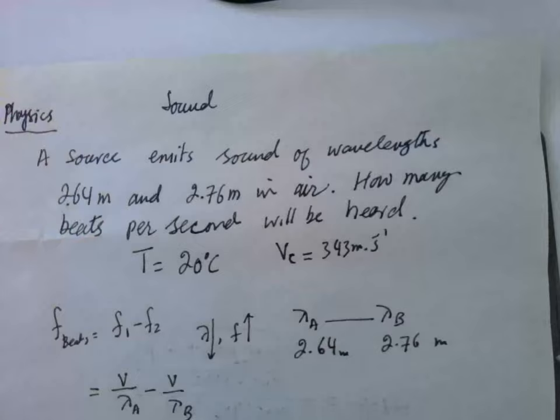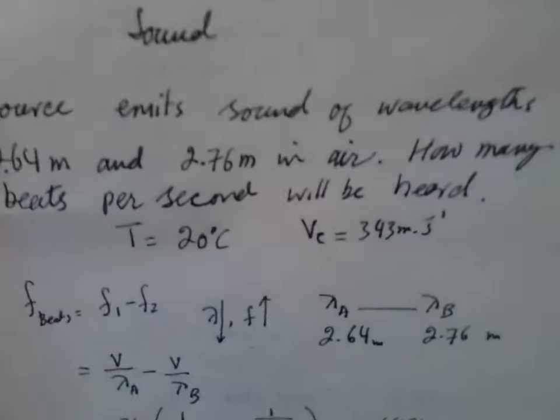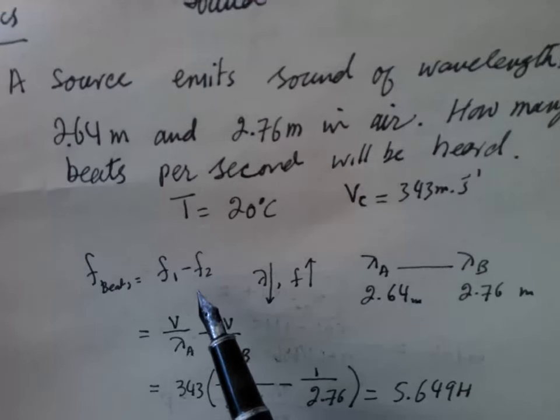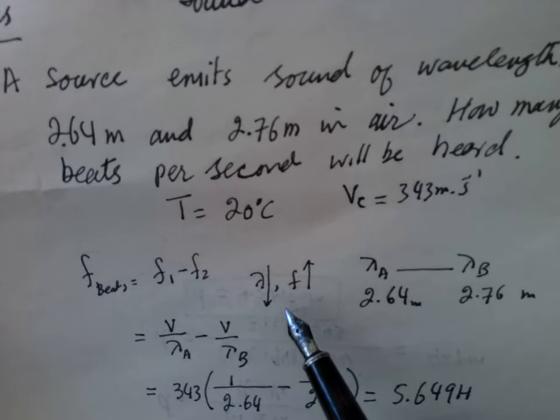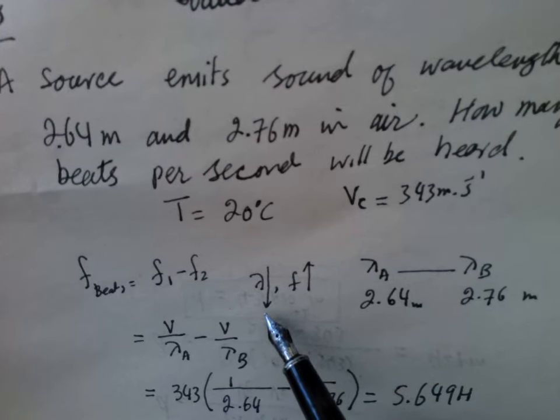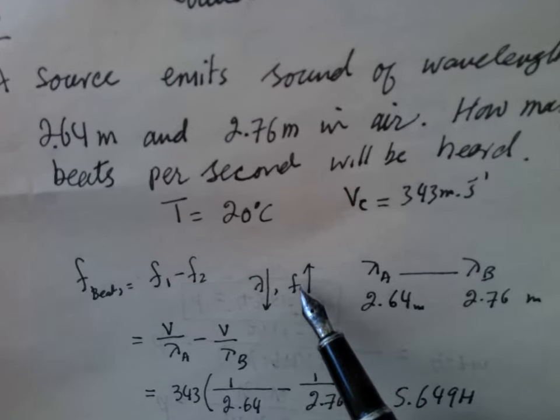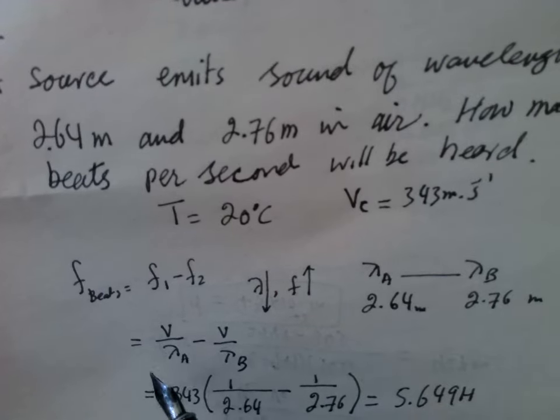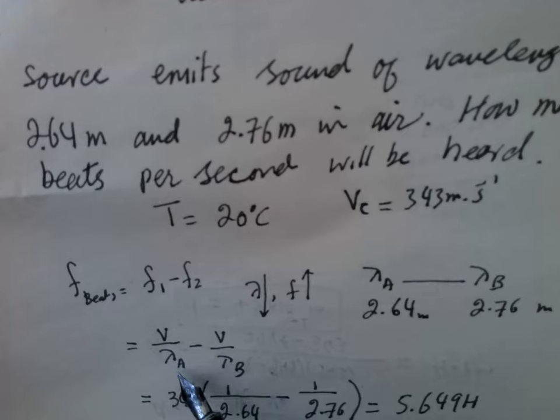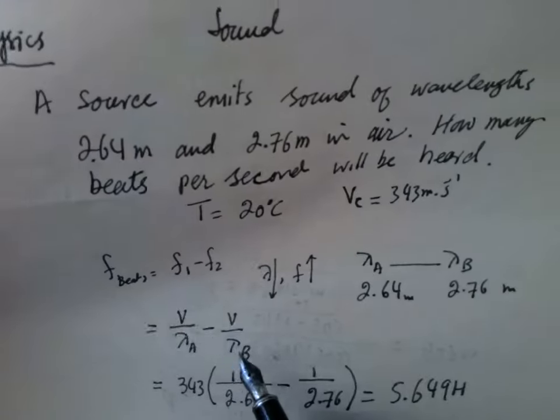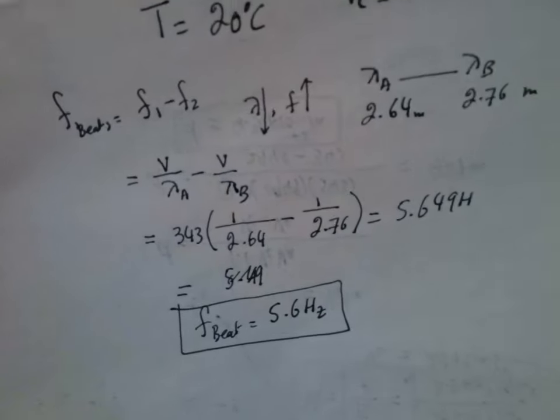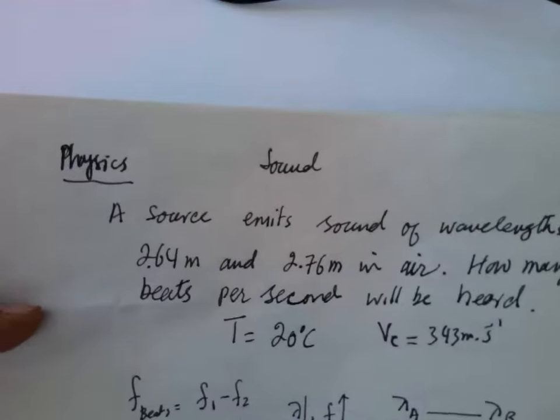So this beat frequency is the difference of the two frequencies: larger frequency minus smaller frequency. Larger frequency is the frequency with the smaller wavelength. Since wavelength A is smaller, we have velocity over wavelength A minus velocity over wavelength B, and the answer is 5.6 hertz.